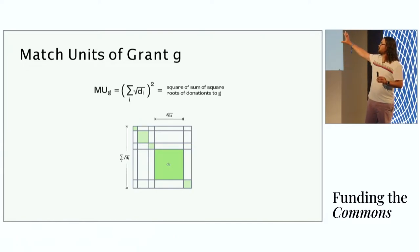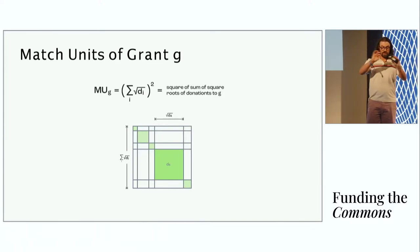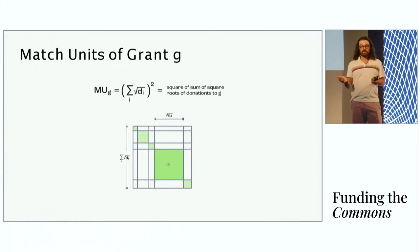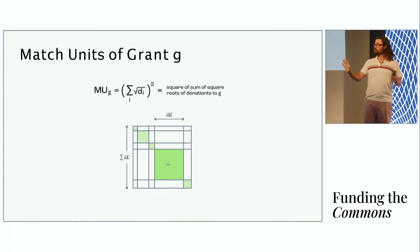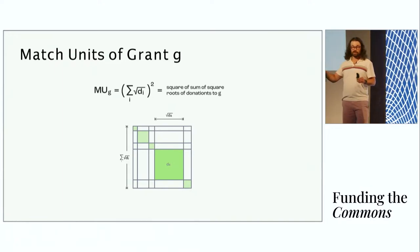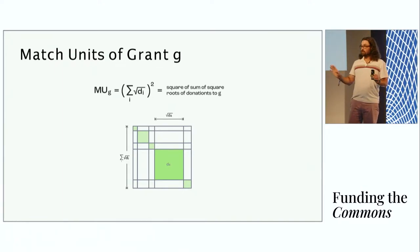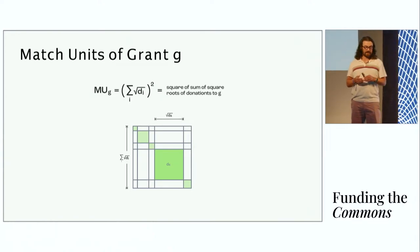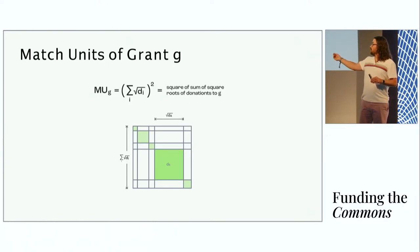I'm going to dive into the details of basic vanilla QF just a little bit. We've come to call the results of the vanilla QF formula the match units for a grant G. And the formula is you look at the donations that users, just indexed by I here, the DI are the donations to grant G. You take the square roots of the donations. You add those square roots together. And you take the square of that sum. And this is the result of this vanilla QF formula. Vitalik Buterin on his blog a few years ago included this really nice geometric interpretation of this formula.